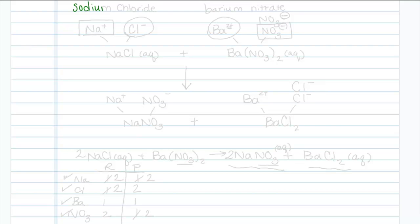For sodium chloride, the sodium ion would be Na+, I got that off the location on the periodic table, and the chloride ion is negative 1. So it's only going to take one sodium and one chlorine to balance, so my formula is NaCl, and it's aqueous.